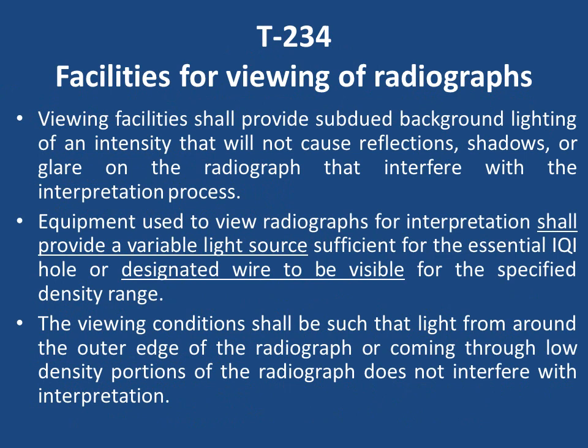T-234: Facilities for Viewing of Radiographs. Viewing facilities shall provide subdued background lighting of an intensity that will not cause reflections, shadows, or glare on the radiograph that interfere with interpretation. Equipment used to view radiographs shall provide a variable light source sufficient for the essential IQI hole or designated wire to be visible for the specified density range. The viewing conditions shall be such that light from around the outer edge or through low density portions of the radiograph does not interfere with interpretation. The viewer should allow adjustment of light intensity so the designated wire is made visible.